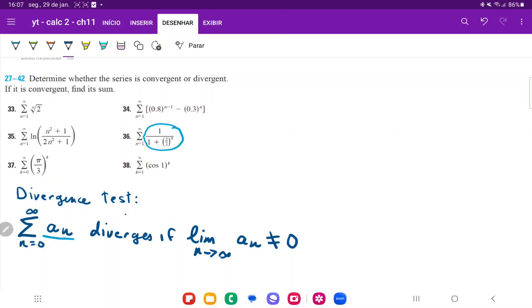So the first thing we're going to do is take the limit of the stuff inside the summation symbol and see if that goes to zero. We're going to take the limit as n approaches infinity of the stuff within the summation symbol, so 1 over 1 plus 2/3 to the power of n.